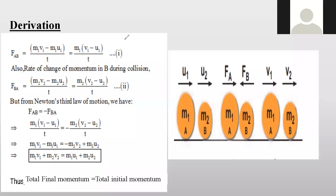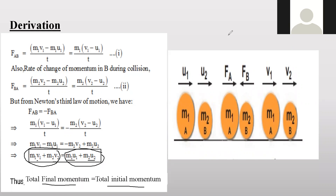Here, u1 and u2 are the initial velocities, so the right-hand side gives the total initial momentum. v1 and v2 are the final velocities, so the left-hand side gives the total final momentum. It has been proved that initial momentum is always equal to final momentum. This is how we write the derivation for the law of conservation of momentum.